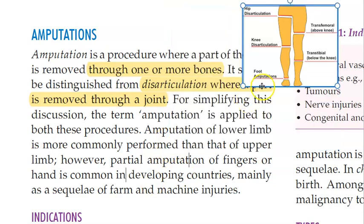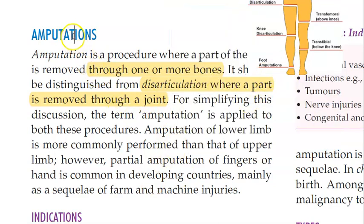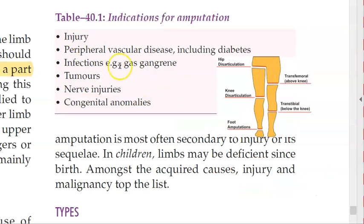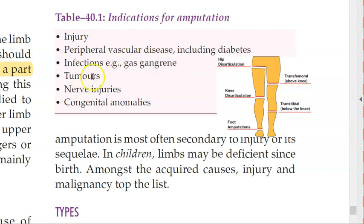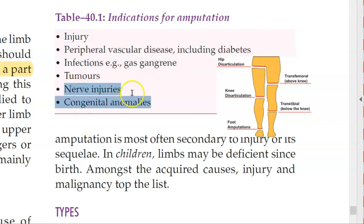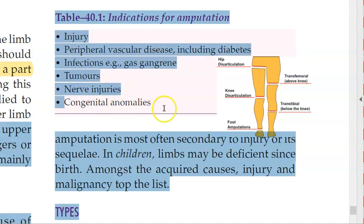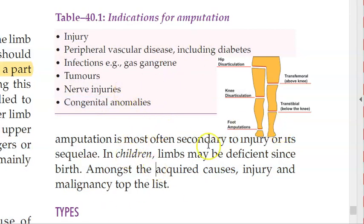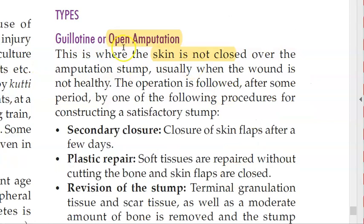When will you perform amputation or disarticulation? The indications include injury, diabetes causing vascular disease, gangrene, gas gangrene, tumors, nerve injury, and congenital anomalies. These are the main indications you need to know for amputation.